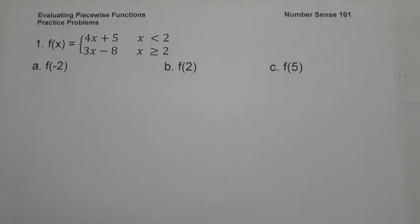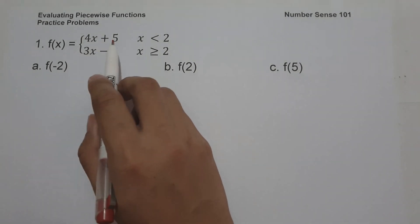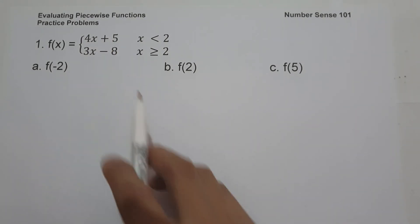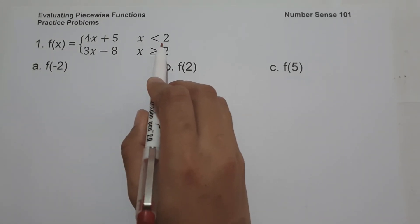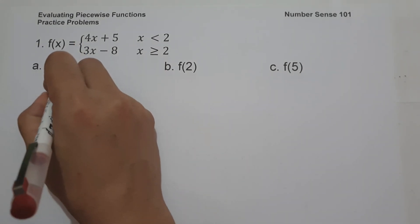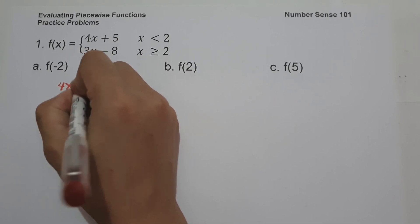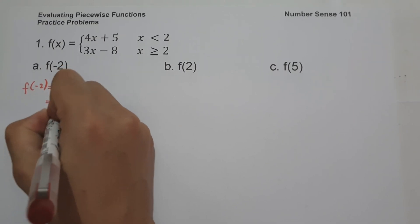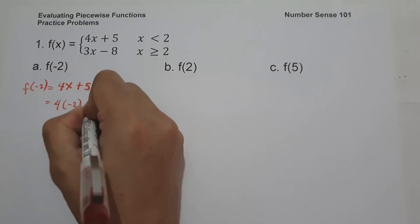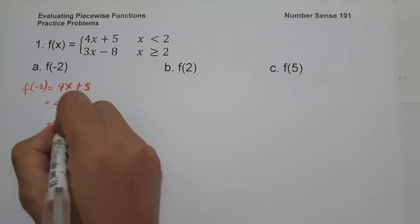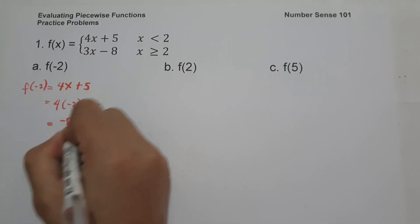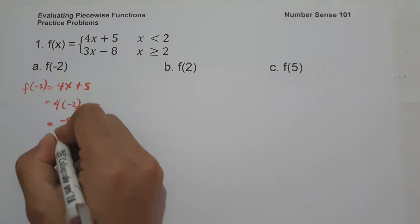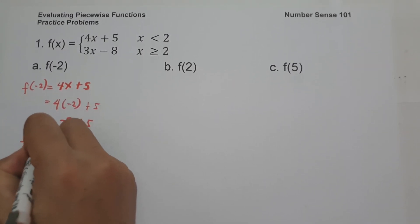On letter A, how can we find the value of f of negative 2? Which particular function are we going to use — 4x plus 5 or 3x minus 8? Since negative 2 is less than 2, we are going to use 4x plus 5. So this will be 4 multiplied by negative 2 plus 5. 4 times negative 2 is negative 8, plus 5, and that is negative 3. So this will be the value of f of negative 2.